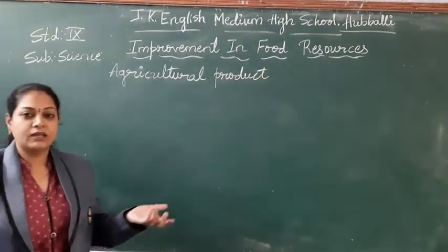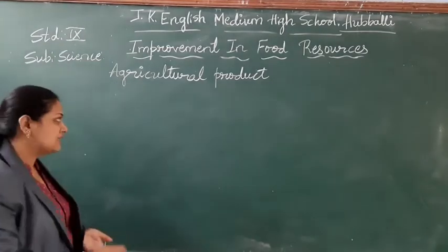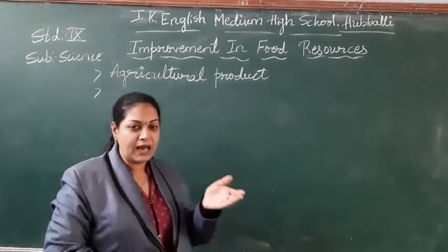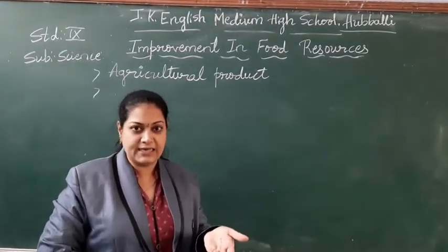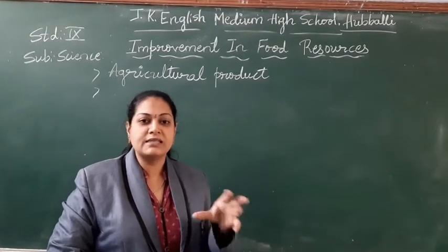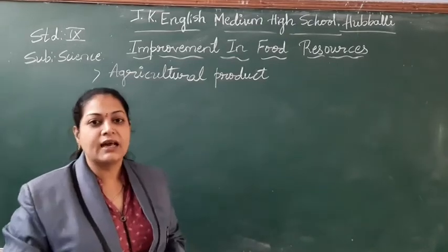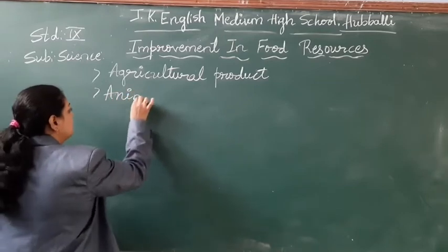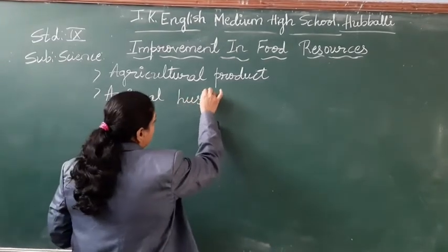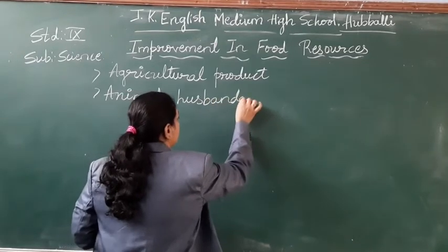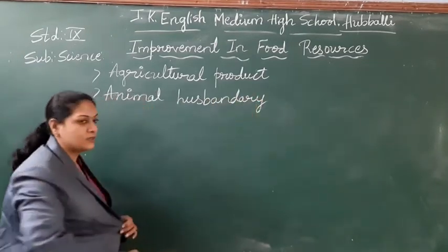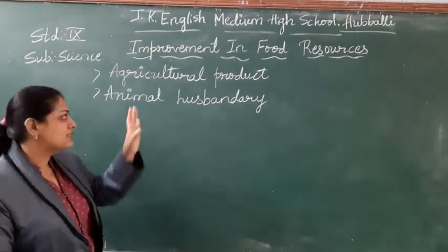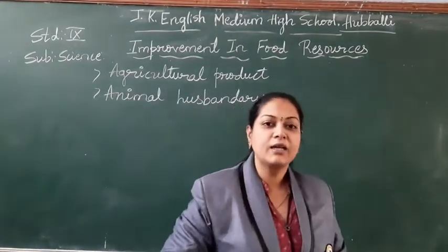And I also said milk, fish, and meat. So these are all animal products. When we are talking about animal products, it is a branch of science called animal husbandry. So we are going to focus on two things: one is about agriculture, and one is about animal husbandry.